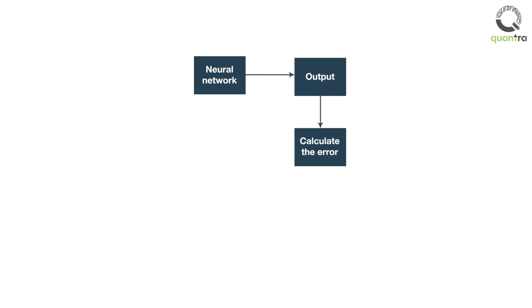Let us see how it works intuitively. Initialize the weights and bias of every neuron with a random value and predict the output. Then, calculate the error which is the difference in predicted output and actual output. This error is also called the loss function.